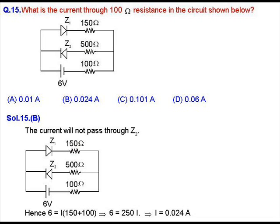So the final working circuit that we will get is 6 volt battery connected to the Z₁ diode along with the 150 ohm resistor, which is further connected to the 100 ohm resistor in series. We can write KVL for this circuit as 6 volt equals I times 250 ohms.